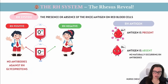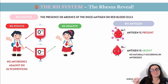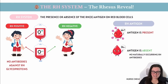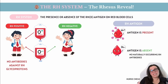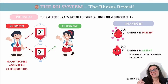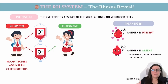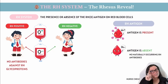The next blood group system is the RH system, named after the rhesus monkey — that's where scientists first discovered the RH protein. If you have the RH protein on your red blood cells, you are RH positive. If you're missing that protein, you are RH negative. There's no in-between. If someone is RH positive, they can receive blood from both RH positive and RH negative donors, because their body doesn't make antibodies against RH — it sees the protein and says we're good to go.